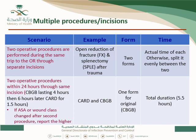If two operative procedures are performed within 24 hours through the same incision — for example, CABG both lasting four hours followed by a return to OR for another procedure lasting one and a half hours, totaling 5.5 hours — fill only one form since both are through the same incision within 24 hours. The total duration recorded for CABG on that form will be the combined total of 5.5 hours.